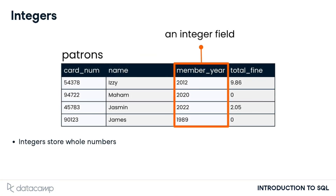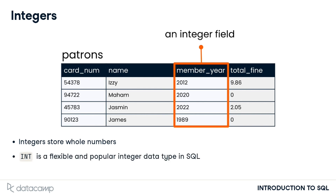Integer data types store whole numbers, such as the years in the member year column of the patrons table. Just as with strings, SQL offers a few different data types for storing integers, depending on how big the numbers we'd like to store are. Int, a common SQL integer data type, can store numbers from less than negative 2 billion to more than positive 2 billion.